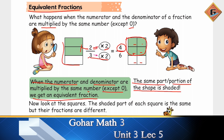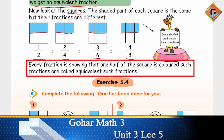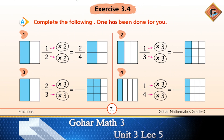To explain this further, look at the squares. The shaded part of each square is the same, but their fractions are different. In each square, half of the shape is shaded. The fractions shown are 1/2, 2/4, 3/6, and 4/8 — all different, yet every fraction shows that one half of the square is colored. Such fractions are called equivalent fractions.